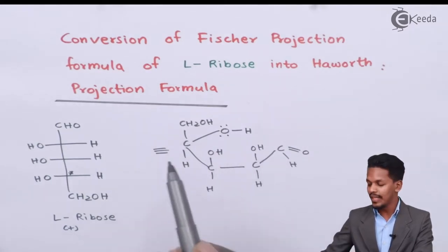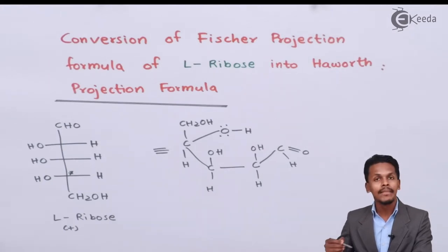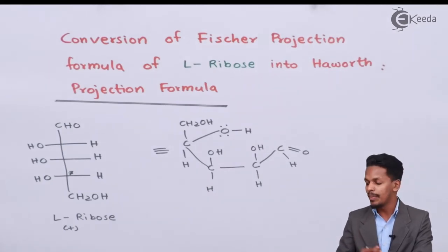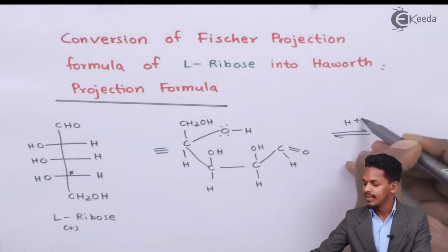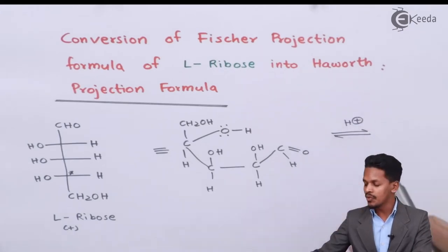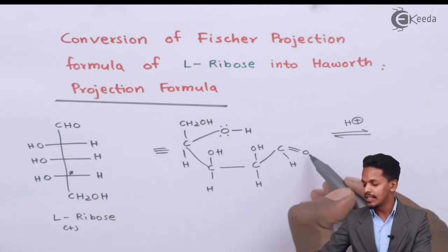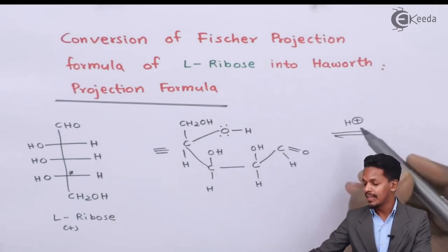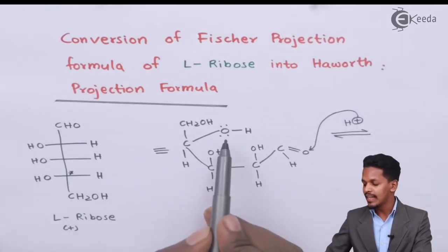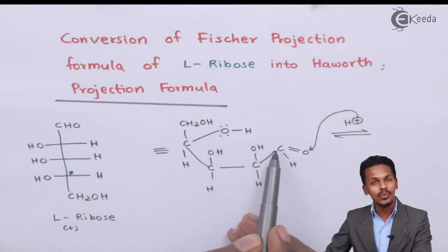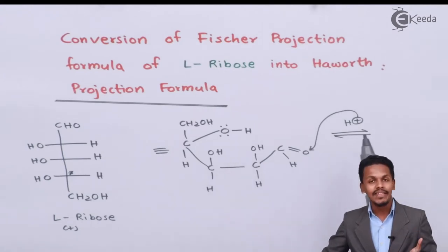This structure is not yet the Haworth projection formula — we still need to convert it. To do so, let us treat this with acid. In the presence of a proton, the carbon-oxygen bond is polar in nature, and the oxygen will carry a negative charge, so H⁺ will attack that position.